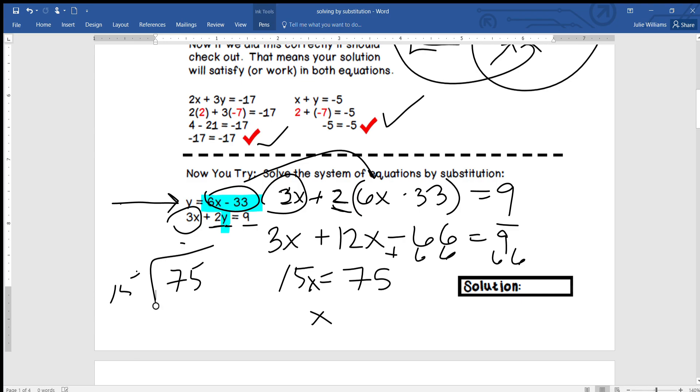And then equal to the 9. So we use our distributive property, so 3x plus 12x and then minus 66 equals 9. So 15x, I'm going to add the 66 to both sides, so 75. How many 15s are in 75? There should be 5 in there, but let's just do our math. So if we do 5 times 15, 75. Okay, so x is equal to 5. So coordinate pair form, you can go ahead and write that guy.